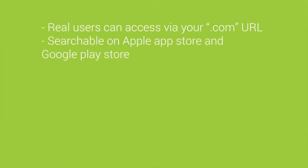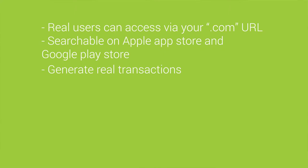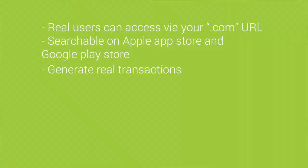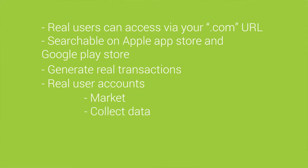Unlike a non-functional prototype, when you're building an MVP, it is going to function. It's a product that real users will be able to access by going to your .com URL or searching for you on the Apple App Store or the Google Play Store. They can download it and use it. If you're making it to make money, it will be able to generate real transactions — handle credit cards, debit cards, bank transactions, however you set it up. If you're trying to get real users, real accounts are there for you to market, pay attention to, and collect data from.